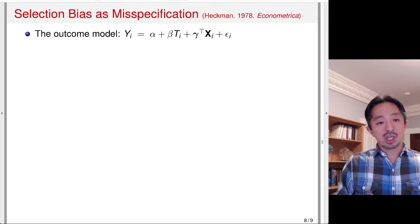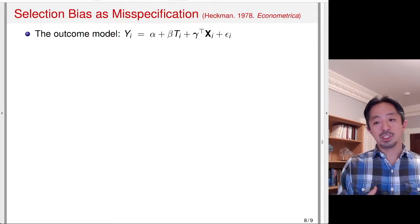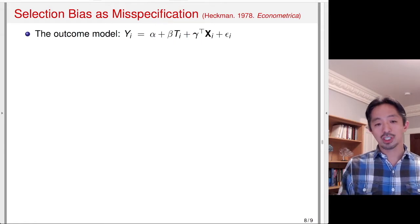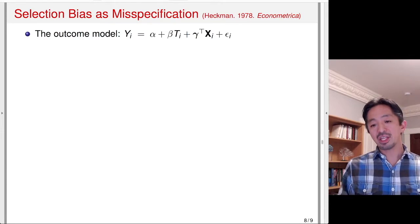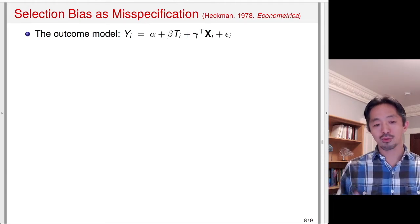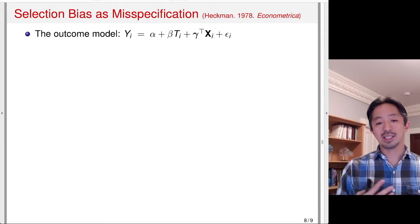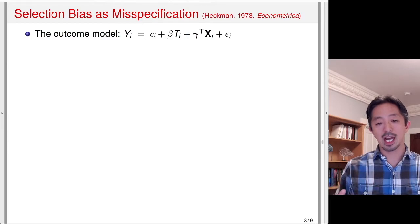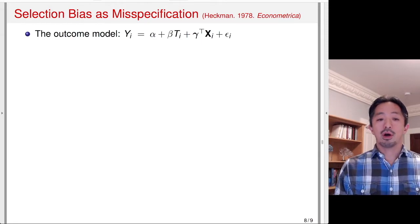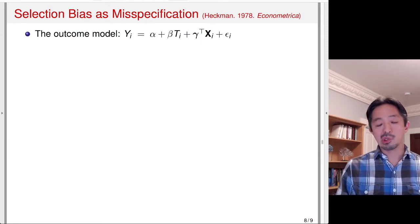The last thing I would like to discuss is an alternative to sensitivity analysis. Sensitivity analysis is sometimes frustrating because in reality we don't know how big the partial R-squared is. We are just saying: if the unobserved variable is this large, then the bias would have been this big. That's an important thought exercise, but it doesn't solve the unobserved confounding problem.